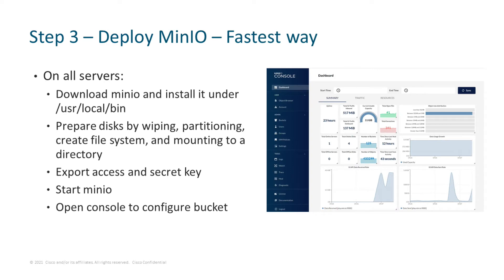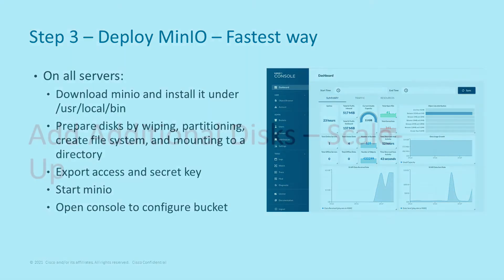The final step three of the deployment is to install and configure MinIO. One approach is straightforward: download it, install it, prepare the disks you want to use for MinIO, export the MinIO root user access and secret key, and then start MinIO. When you open the console, you can easily configure a bucket where you can write data.